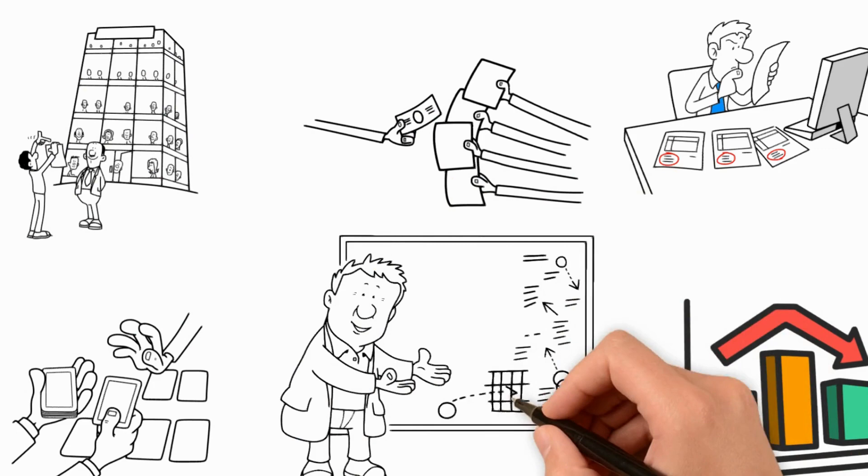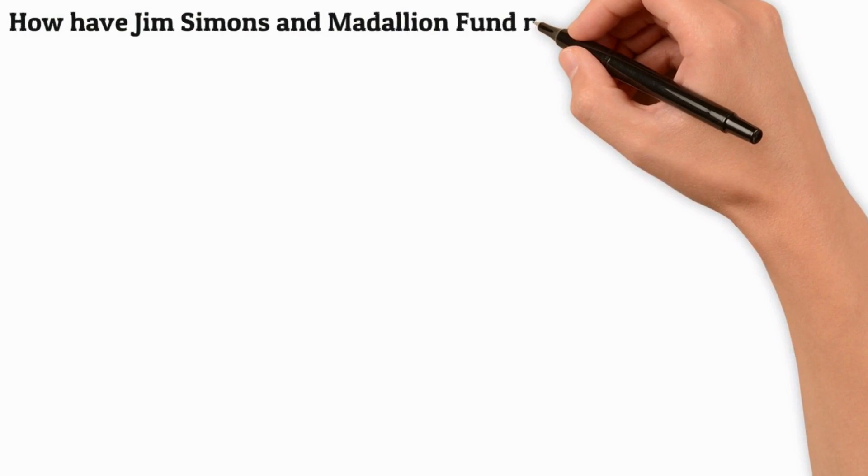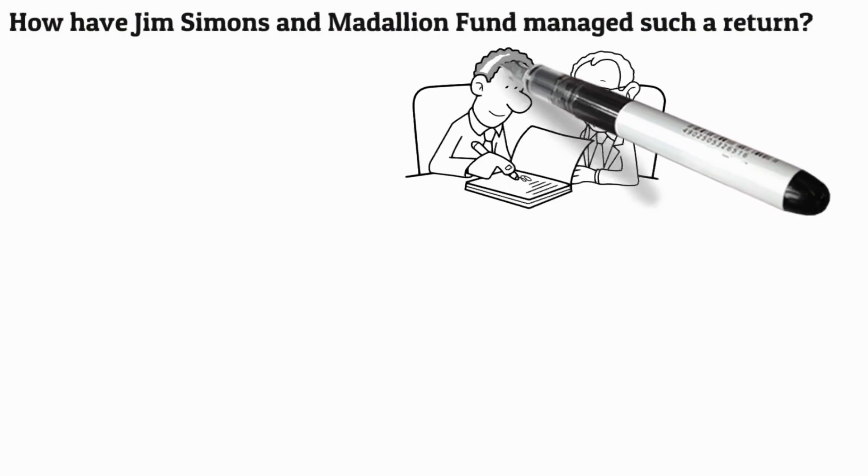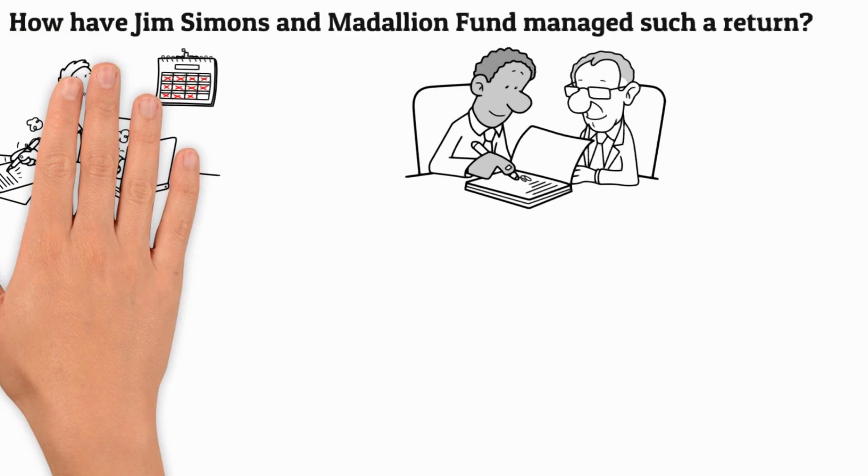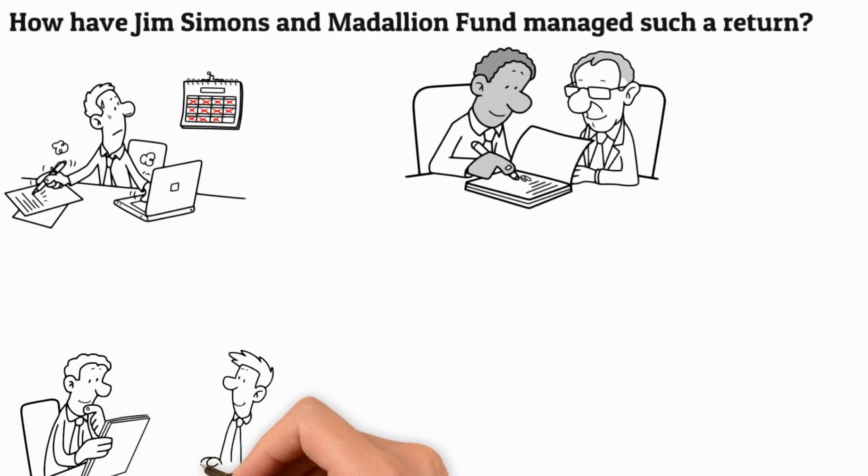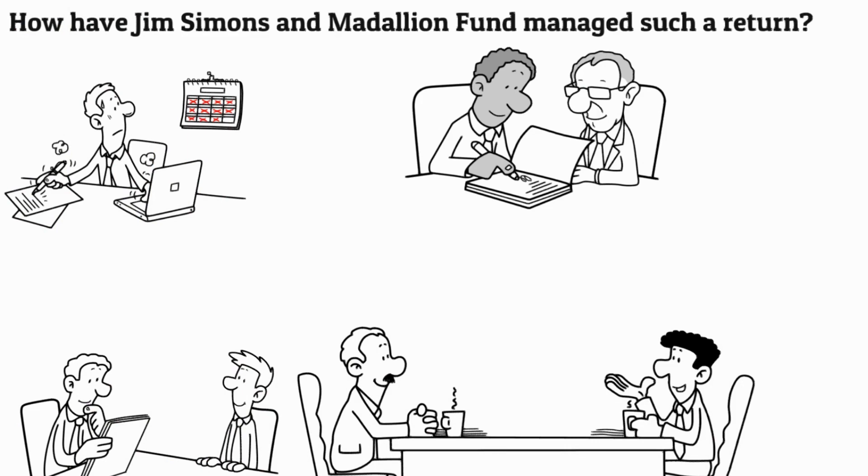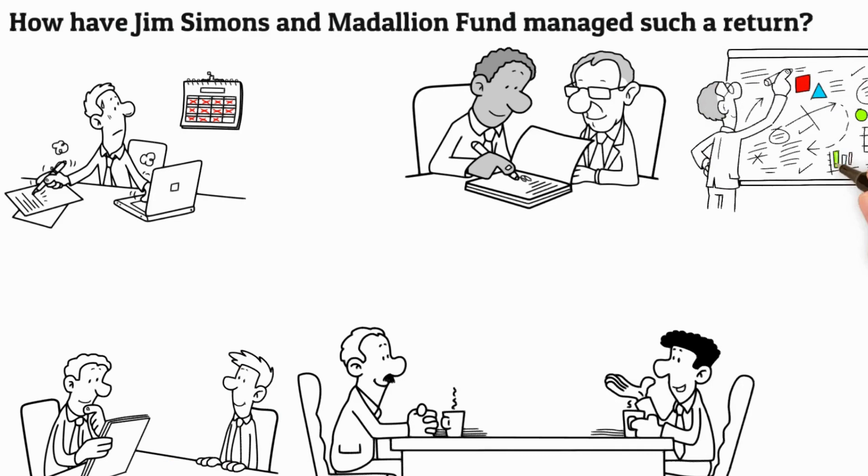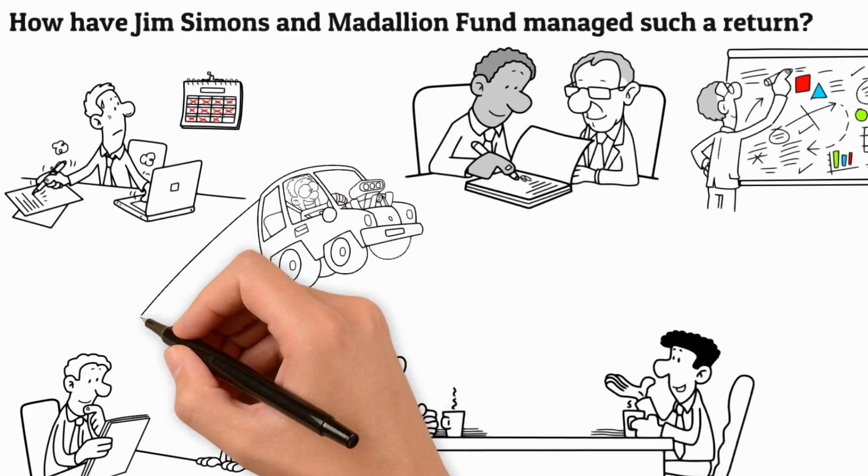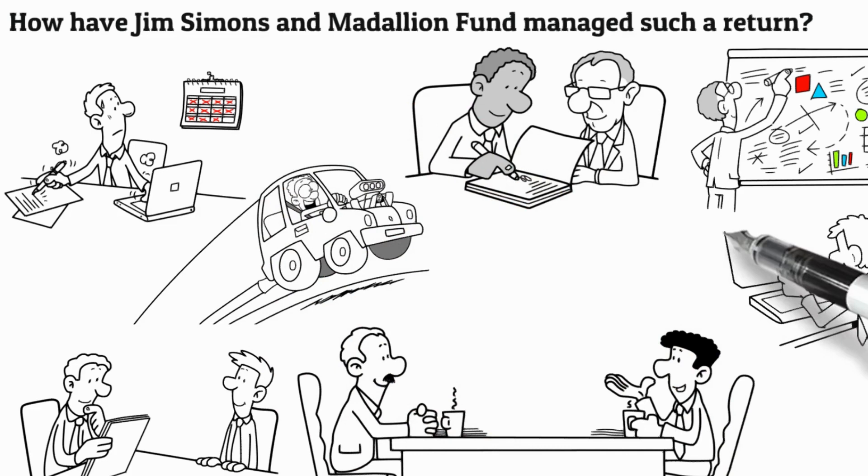How have Jim Simons and the Medallion Fund managed such a return? Jim Simons and the Medallion Fund have consistently delivered impressive returns over the past few decades. By leveraging quantitative strategies and a focus on data-driven decisions, they have been able to achieve such a high return on investment. In the 1960s, Simons and his father, Alfred Simons, began developing quantitative trading models as a way to maximize their investment returns. They moved their hedge fund, the Medallion Fund, to New York and made a name for themselves in the market by bringing out groundbreaking analytics and machine learning systems.